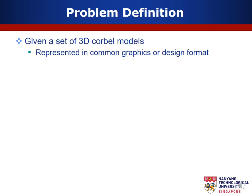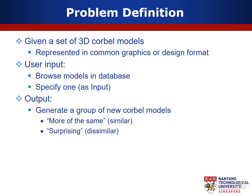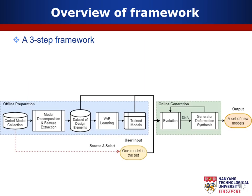Our problem can be described as follows. Given a set of 3D cobalt models represented in a common format, the user can browse these models and specify one. Then the algorithm will automatically generate a group of new cobalt models that are more of the same and surprising compared to the specified one. We propose a framework to realize creative cobalt modeling, which combines geometric modeling with machine learning techniques and example-based modeling.